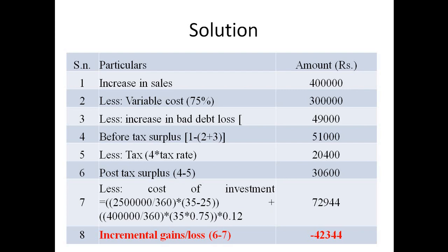Due to this change in policy, sales would go up by Rs. 4 lakh. Variable cost is Rs. 3 lakh — 75% of that — which we deduct. Then we calculate the increase in bad debt loss: the bad debt ratio changes from 0.05 to 0.06. We deduct variable cost and the increase in bad debt losses from sales to get the before-tax surplus. Applying 40% tax, we get the post-tax surplus.